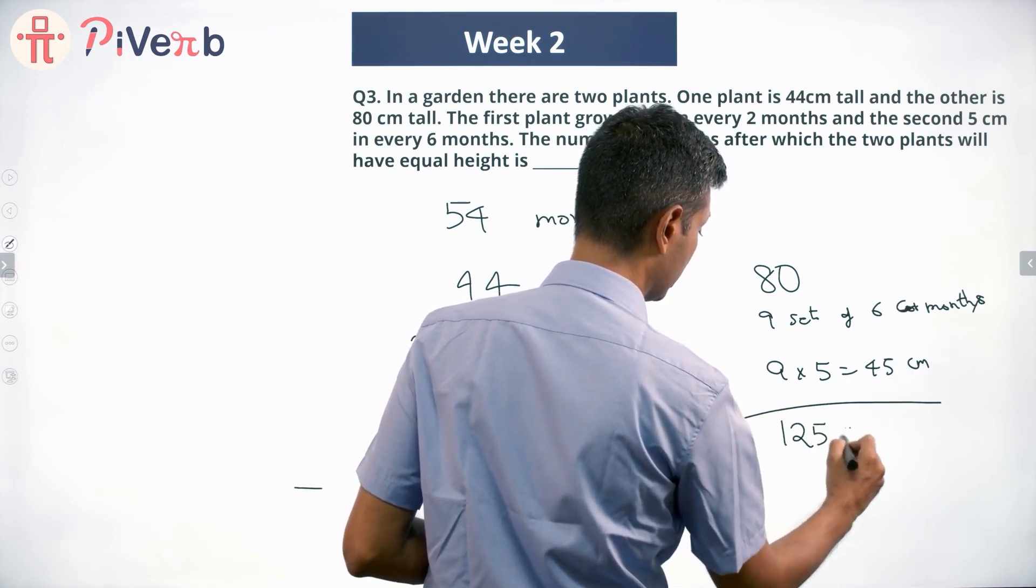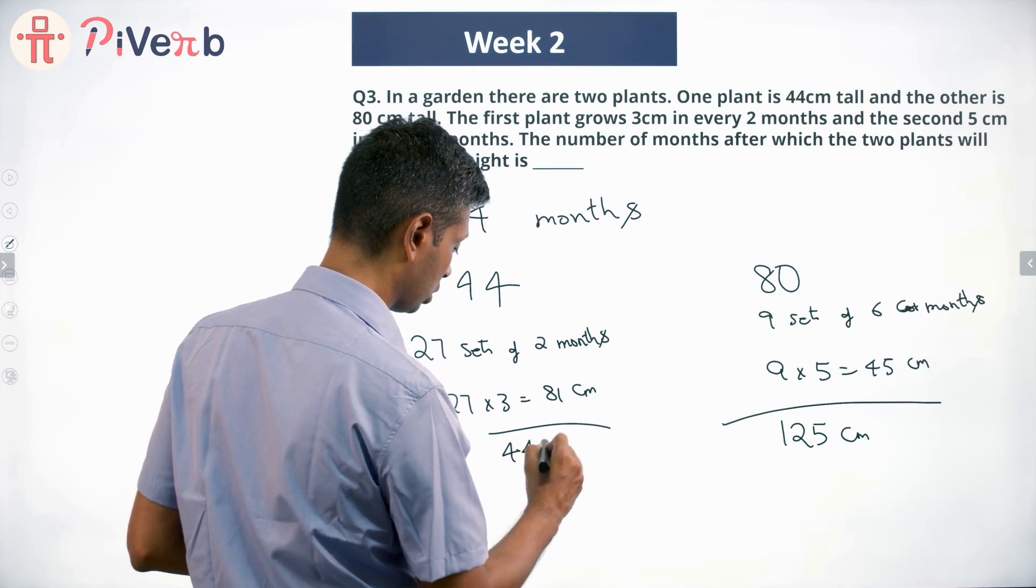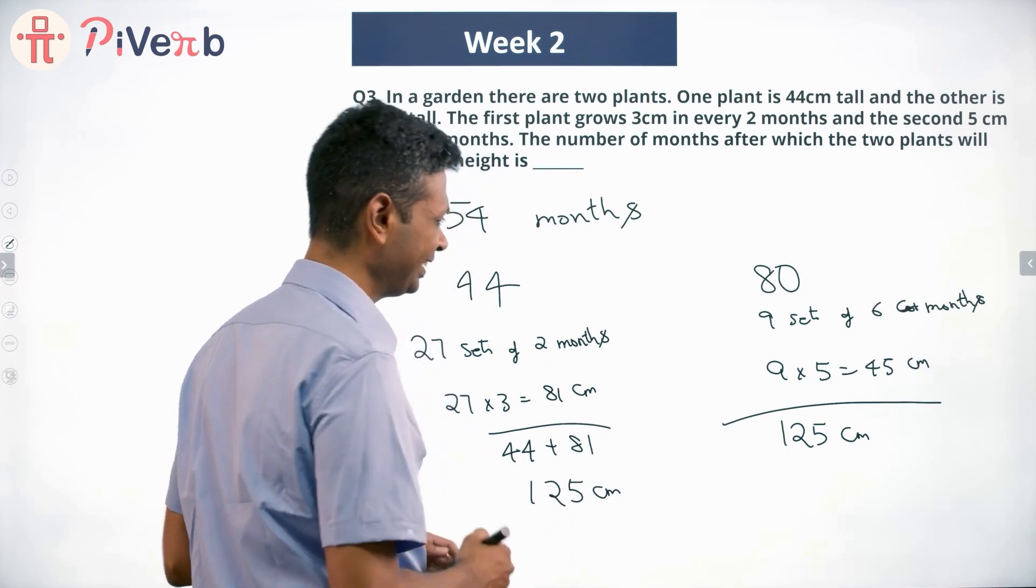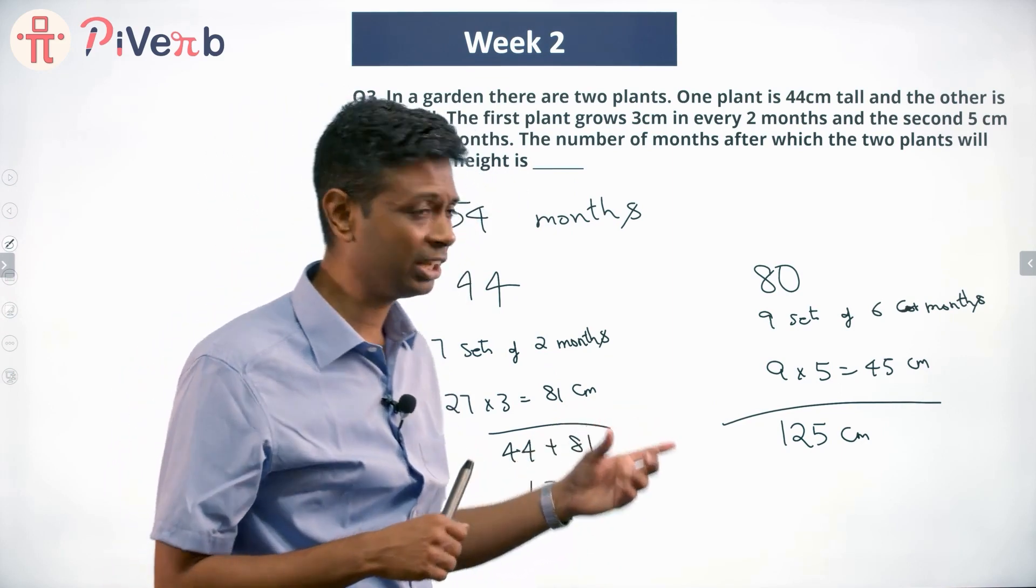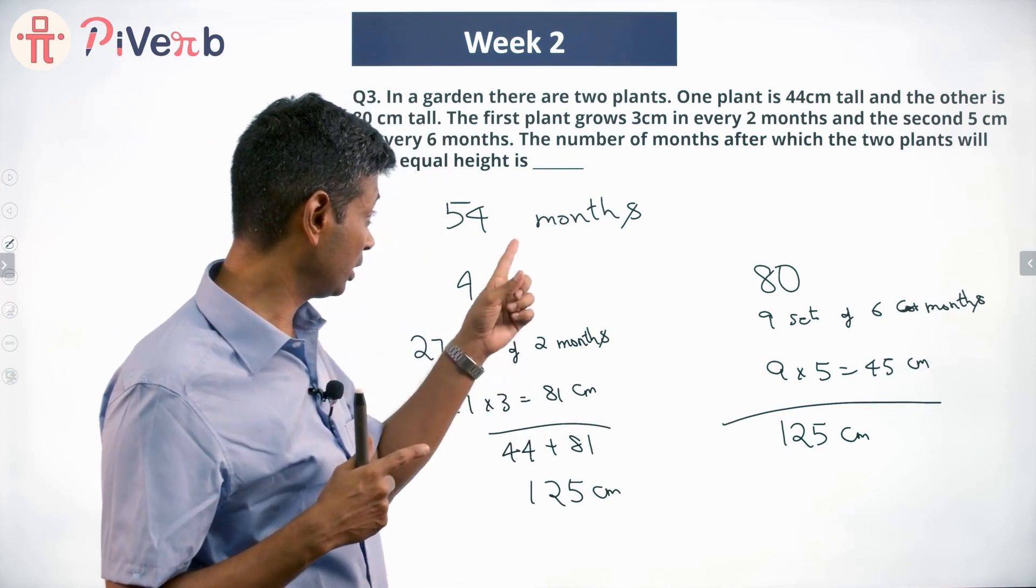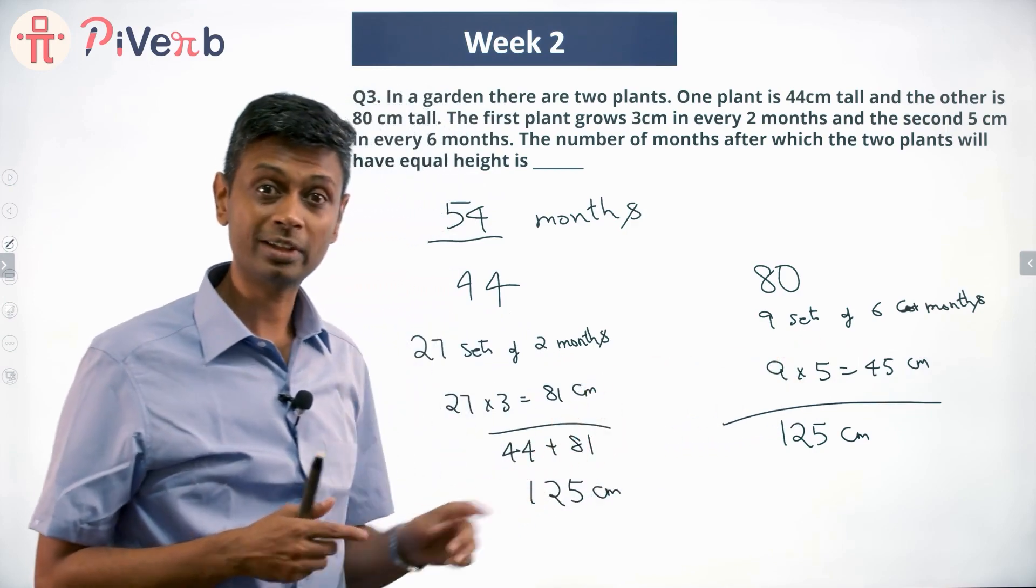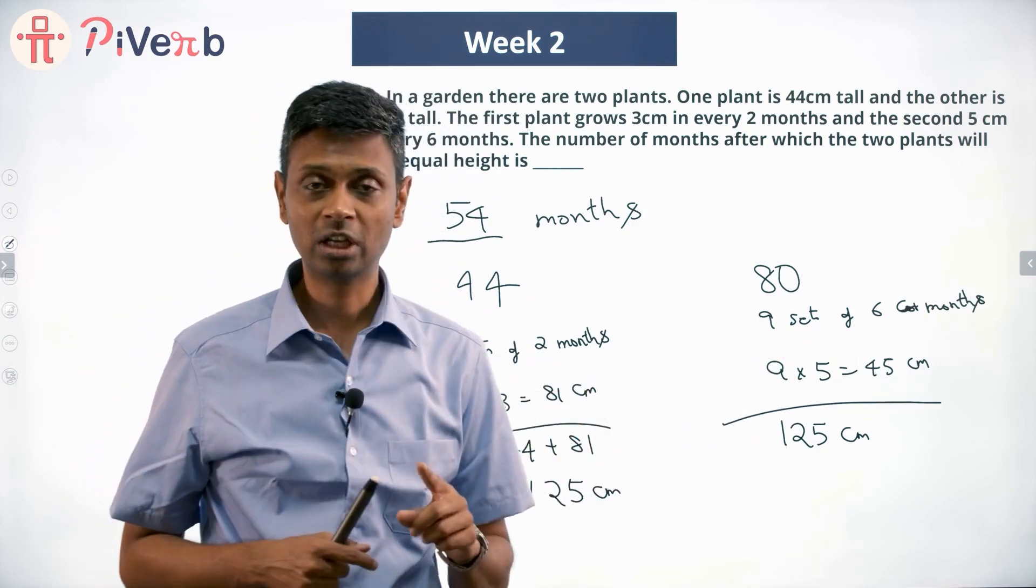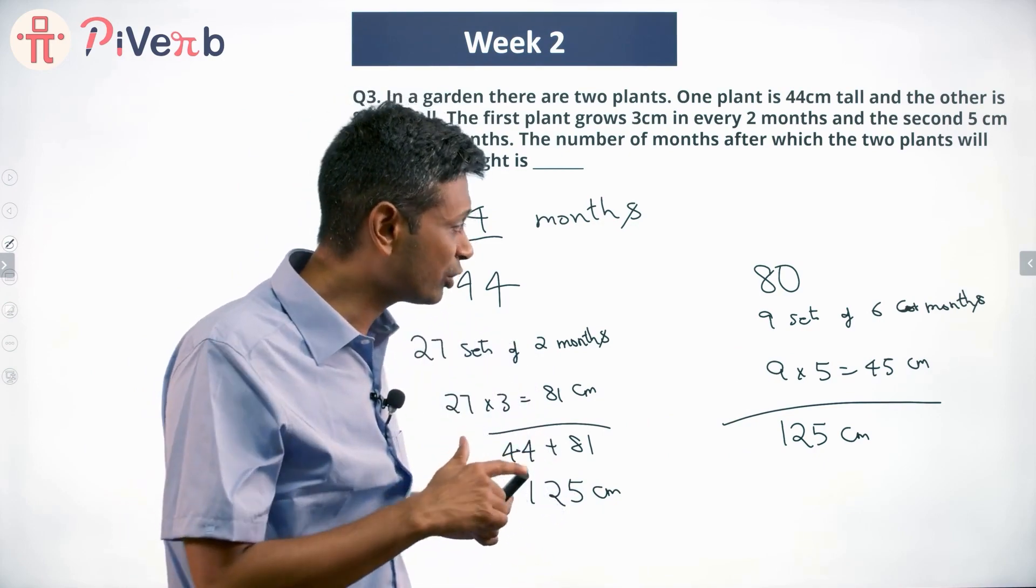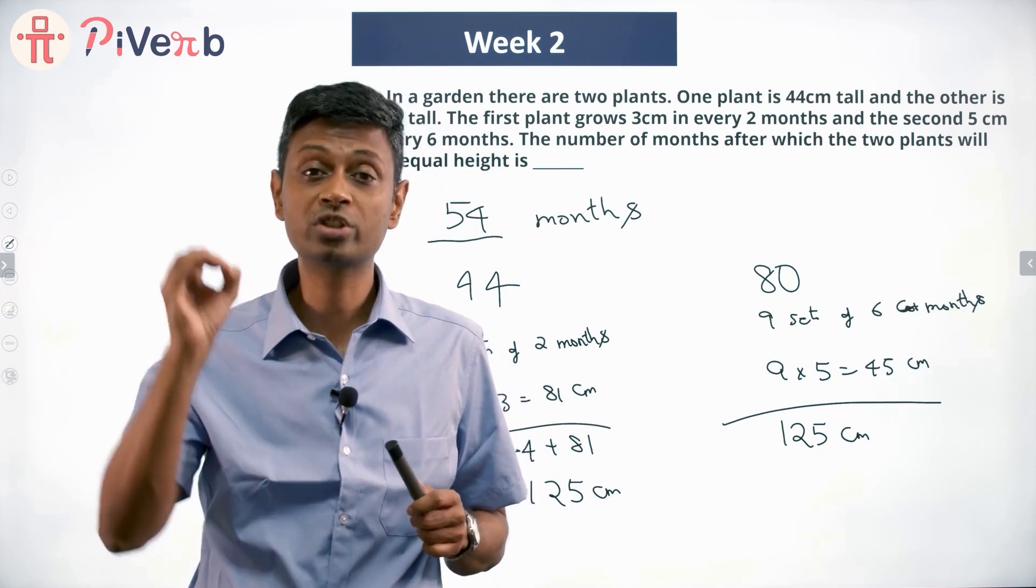This will have a height of 125 centimeters. This will have a height of 44 plus 81, which again is 125 centimeters. In this case these two perfectly match. The difference is 54 months, which is a multiple of 6 months and also a multiple of 2 months, so life is easy. But if the questions were different and the numbers did not perfectly match, then you have to count out in terms of the steps.